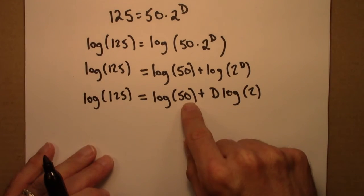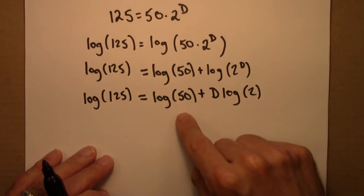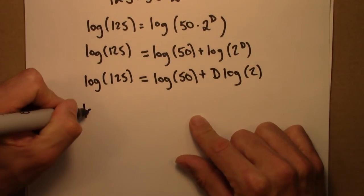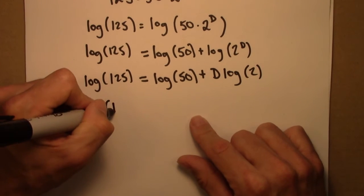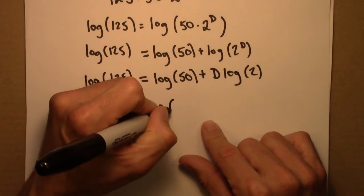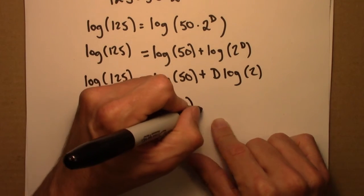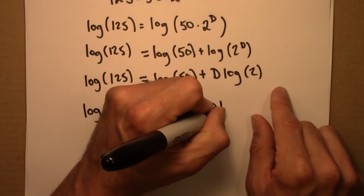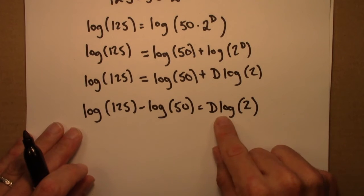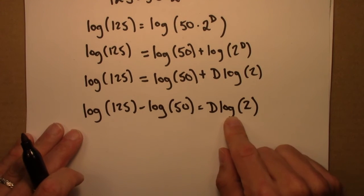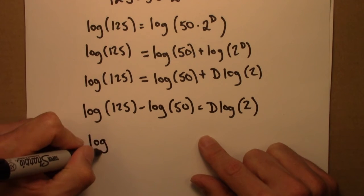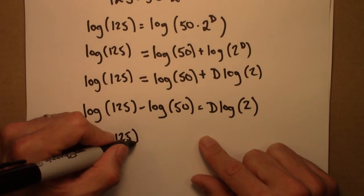The first thing I'll do is move 50 over to the left by subtracting log 50 from both sides. Then the last step is to divide both sides of the equation by log 2. And when I do so, I have to divide the entire left-hand side.